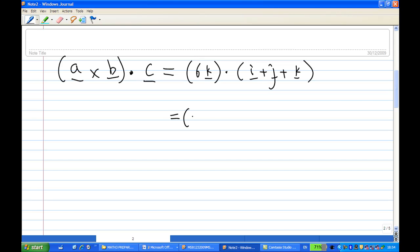C is i plus j plus k. Now you can write this as 0i plus 0j plus 6k for 6k here. And i plus j plus k means 1i plus 1j plus 1k.